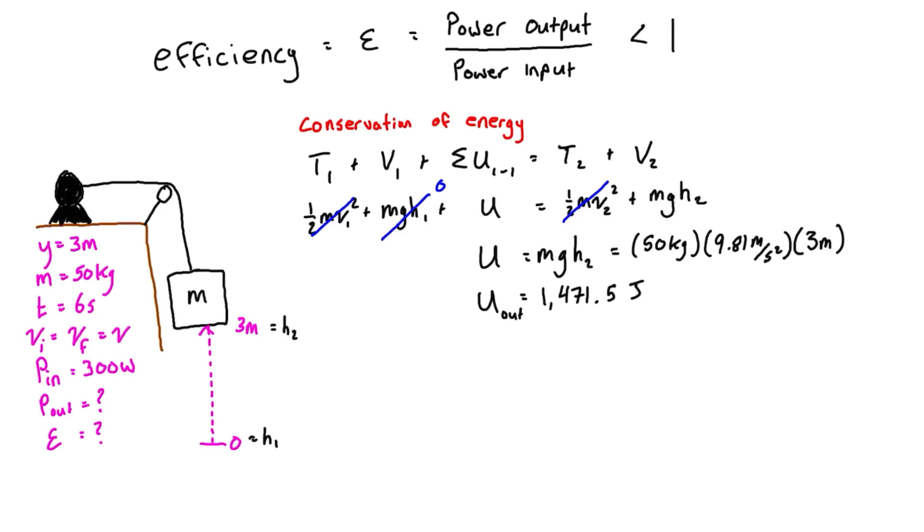Basically, we're just going to plug that into the average power equals work over time taken equation. So we can write that P average—and this is really P out if you prefer to write it like that—is just equal to U over t.